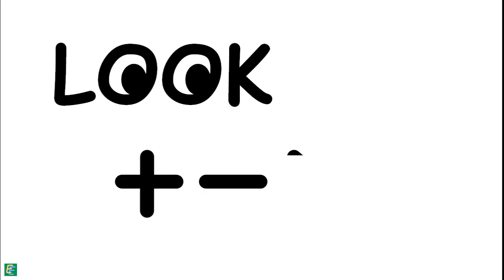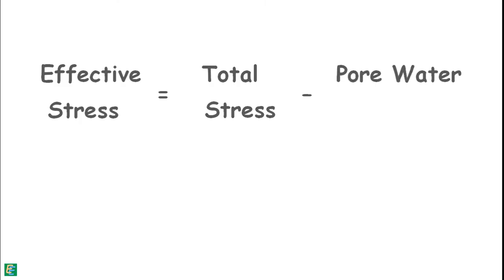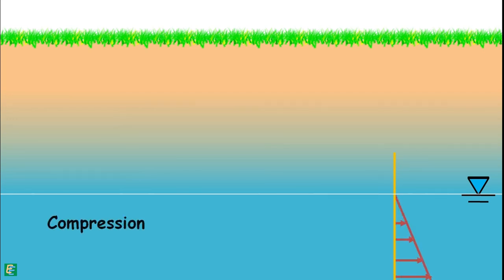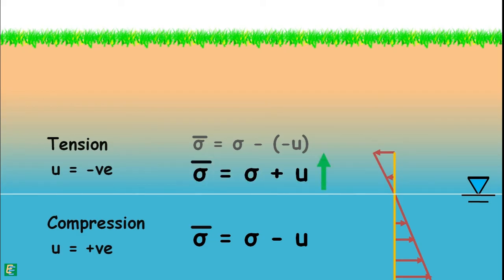Mathematically, effective stress equals total stress minus pore water pressure. Below the groundwater table, pore water is in compression and pore water pressure is positive. When pore water is above the water table, it is in tension and pore water pressure is negative. Solving the expression shows that effective stress is greater when pore water pressure is negative. So clearly, effective stress has increased above the water table because of the negative pore water pressure, or capillary pressure, created by capillary rise.